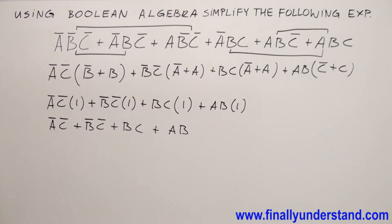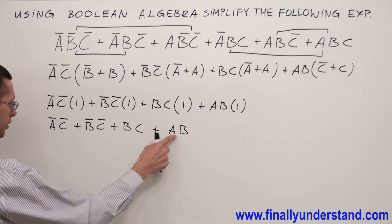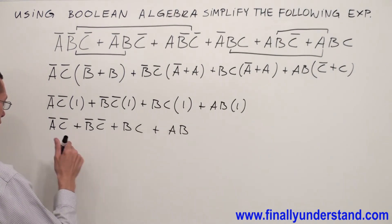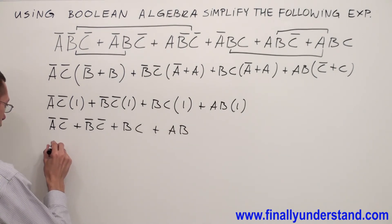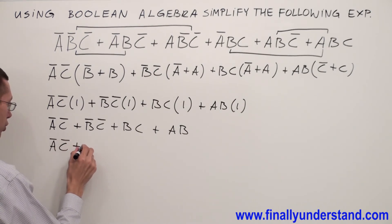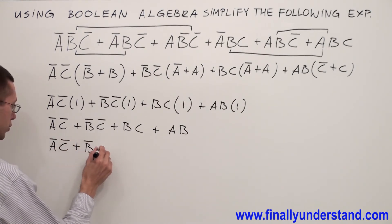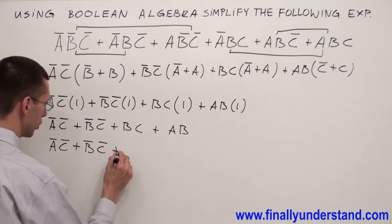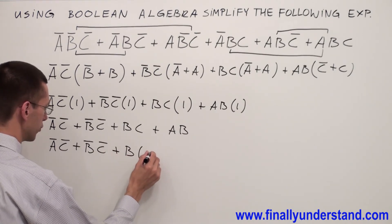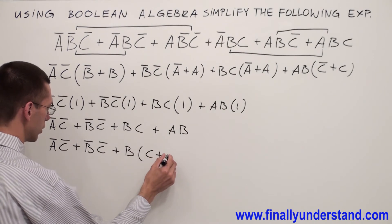Let's take a look what we can factorize in this case. I can factorize B from these two terms. I'm going to have A̅C̅ or B̅C̅ or B and I'm going to have C or A.